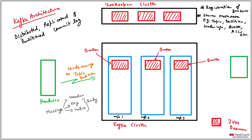Distributed means it is across multiple machines. Replicated means there will be multiple copies, so even if a machine goes down there is no issue — you can work with another copy. Partitioned means it is divided and conquered, because we are dealing with big data and you cannot store all the data on a single machine. So the commit log is partitioned.